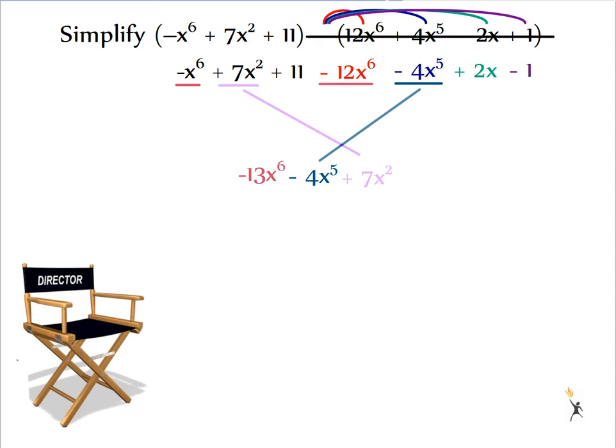Going in descending order still comes my 7x squared. Then my 2x. Then my two constants, 11 minus 1, leaves me with a positive 10.